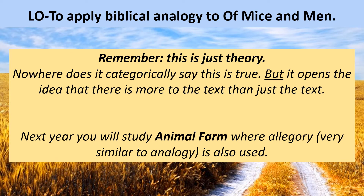So this theory, then — that Of Mice and Men, the relationship between Lenny and George, is actually an allegory for the story of Cain and Abel. You've got to remember this is just a theory; this is not definitely true. Nobody knocked up Steinbeck and said, 'Was this what you actually intended?' But the idea that the text is based on more than just this story gives us more ideas to discuss. Next year in Year 9, we are going to start by studying Animal Farm, which uses allegory — really similar to analogy. Analogy is like two similar stories together, and allegory is more like a fable, a fairy story. If you can get your head around analogy, Animal Farm will also be much easier for you.